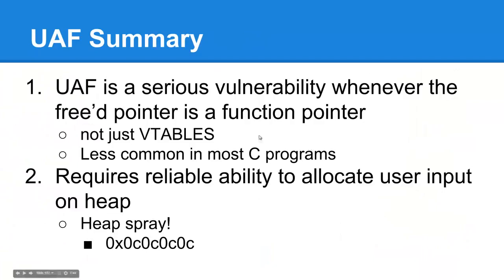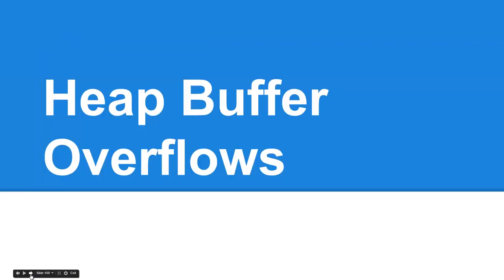To summarize use after free bugs, it's a very serious vulnerability whenever there's a function pointer involved. It doesn't just pertain to V tables. It does exist in C, but it's just less common and depends on the application. The exploitation of a UAF bug relies on the reliable ability for an attacker to allocate user input on the heap, which is typically called the art of heap sprays. There's some very common patterns that are dead giveaways when you're doing forensics or incident response and looking into malware or an attack that does heap spraying. Certain addresses tend to align into a heap pretty well. 0C0C0C is probably the most infamous one.